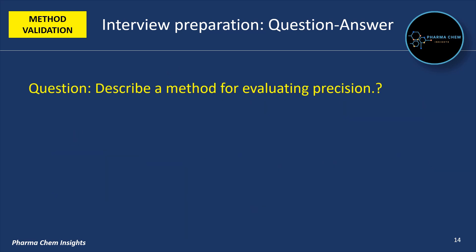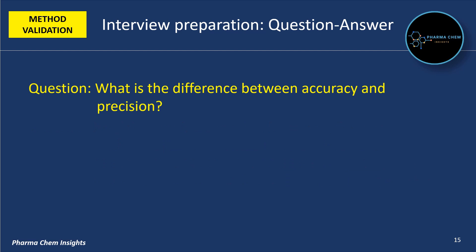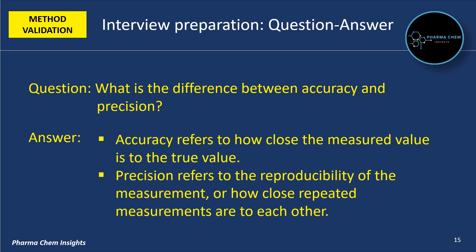Next question: describe a method for evaluating precision. Precision can be evaluated by performing replicate analysis of the same sample under the same conditions over a short time period (repeatability) and under varying conditions (intermediate precision). Next question: what is the difference between accuracy and precision? Accuracy refers to how close the measured value is to the true value, while precision refers to the reproducibility of the measurement, or how close repeated measurements are to each other.